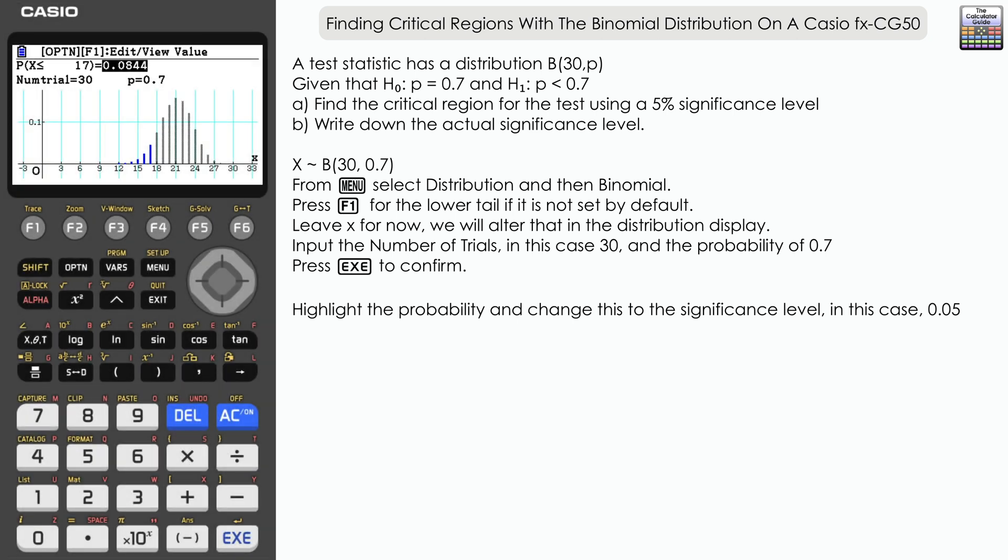Now if you have a look at the probability that's given, 0.0844, that is greater than our significance level of 0.05. Now the calculator...